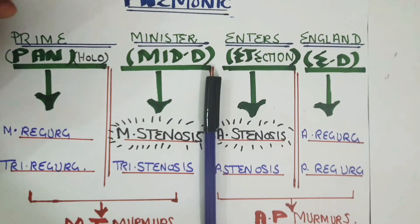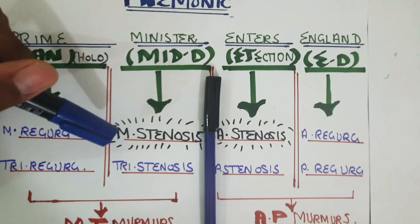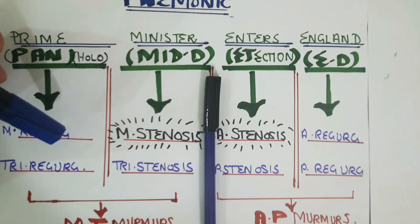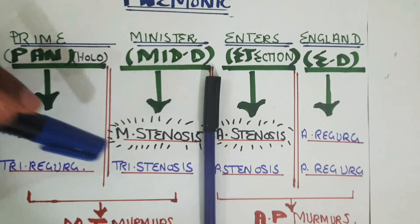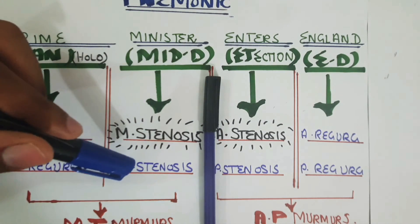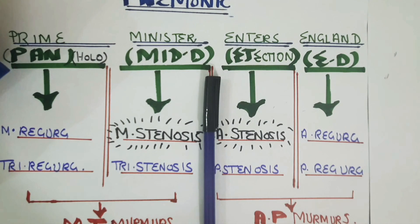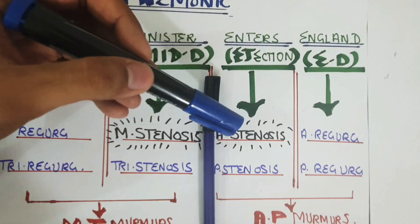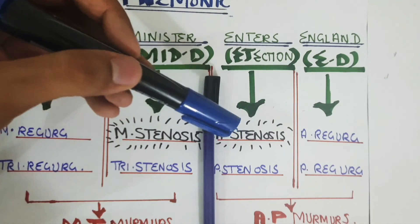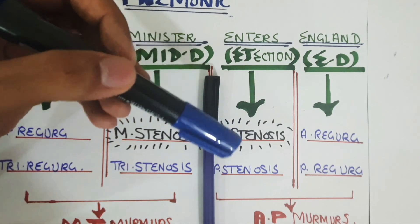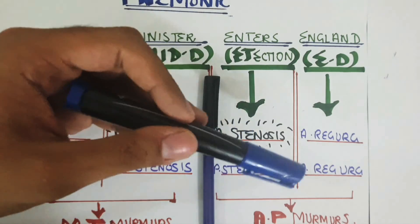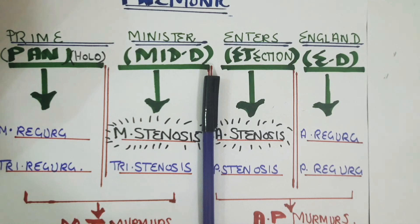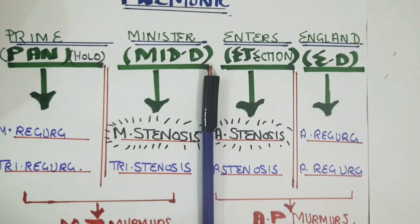So to summarize: for mid-diastolic murmurs, remember mitral stenosis, and the pair is tricuspid stenosis. For pan-systolic murmurs, remember the mitral and tricuspid regurgitation. For ejection systolic, remember aortic stenosis and its pair pulmonic stenosis. And for end-diastolic murmurs, remember aortic regurgitation and pulmonic regurgitation. I hope that helps. Thank you so much.